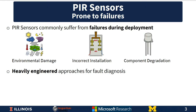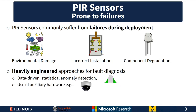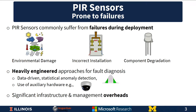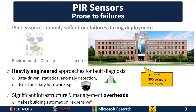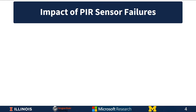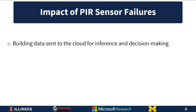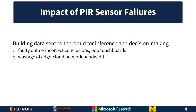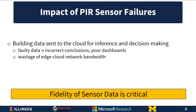Today, we use heavily engineered approaches for fault diagnosis. These are typically data-driven statistical anomaly detection-based techniques, or they use auxiliary hardware such as cameras to validate PIR data. Consequently, this leads to significant infrastructure and management overheads that make building automation expensive. A case in point is our building, which comprises four floors with 300 sensors spread across 244 rooms. Faulty data implies incorrect conclusions, poor dashboards, and wastage of edge-cloud network bandwidth, which is at a premium. Therefore, fidelity of sensor data is highly critical.